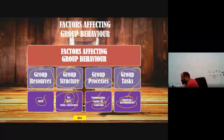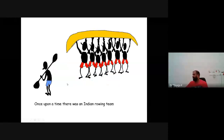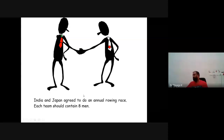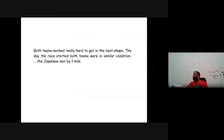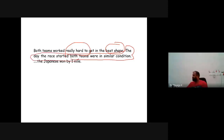Just for a joke, I am showing a slide about how the Indian system is going on — an example of group behavior. Once upon a time there was an Indian rowing team. India and Japan agreed to do an annual rowing race. Each team should contain eight members — one team is from India and one from Japan. Both teams worked really hard to succeed. On the day the race started, both teams were in similar conditions and all eight members of both teams were equally capable.